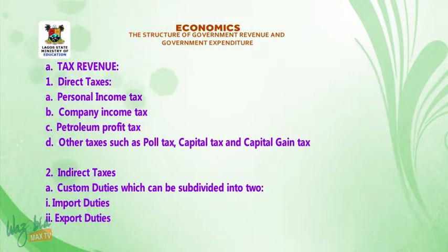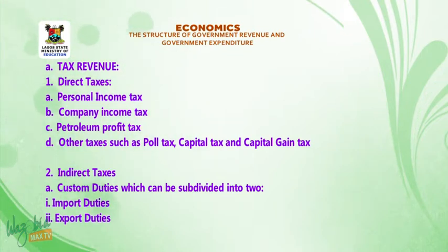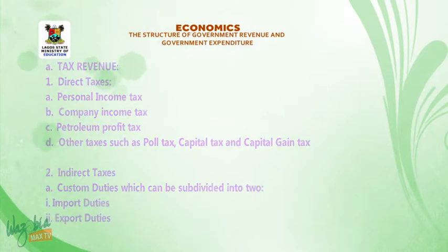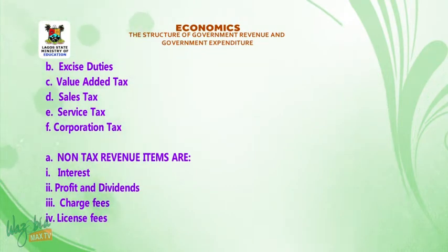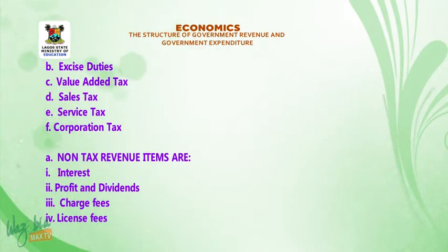B. Indirect taxes. Under indirect taxes we have: 1. Custom duties, which can be subdivided into: A. Import duties, and B. Export duties. 2. Excise duties. 3. Value-added tax. 4. Sales tax. 5. Service tax. 6. Corporation tax.